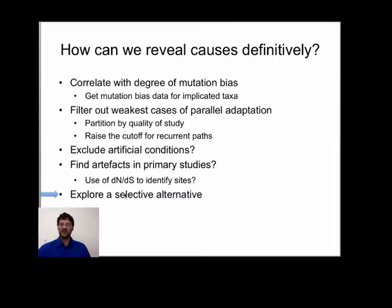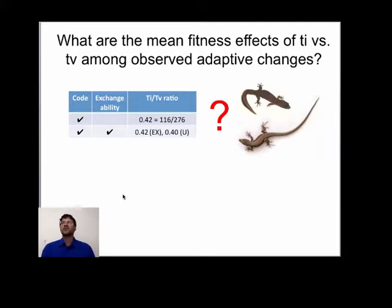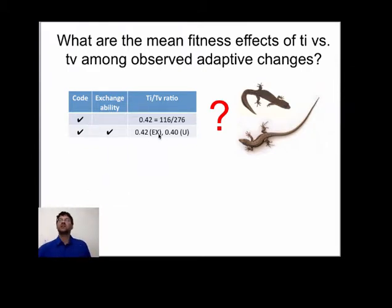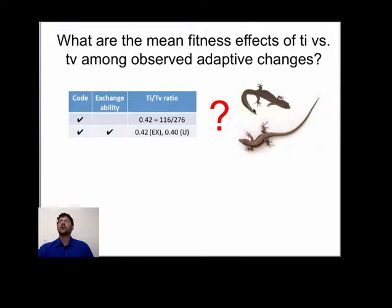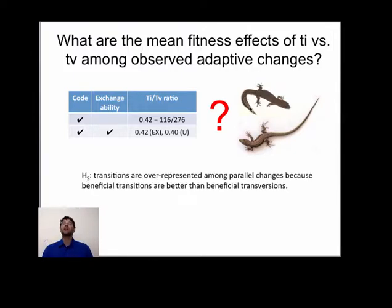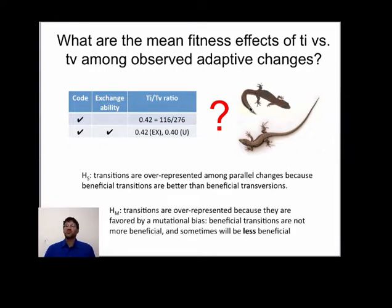I'd like to finish by talking briefly about a selective alternative. I said transitions are not more conservative than transversions, but one could argue we didn't look at exactly the right evidence. Most protein changes in evolution are neutral, so Tang's U matrix measures the chance that a change is neutral; but in cases of adaptation, we're looking at beneficial changes at the high end of the distribution. What we really want to know is not whether transitions and transversions have the same overall distribution, but specifically their upper tails. The possibility is that transitions are over-represented among parallel changes because beneficial transitions are better than beneficial transversions, even if transitions on average are not better.